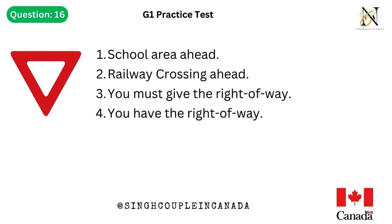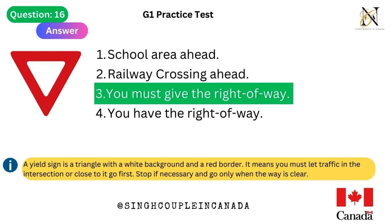Question 16. This traffic sign means: 1. School area ahead. 2. Railway crossing ahead. 3. You must give the right-of-way. 4. You have the right-of-way. Answer is 3. You must give the right-of-way. A yield sign is a triangle with a white background and a red border. It means you must let traffic in the intersection or close to it go first — stop if necessary and go only when the way is clear.